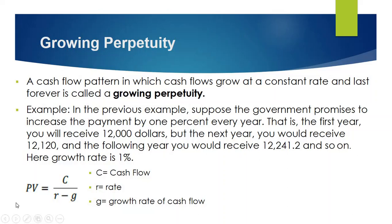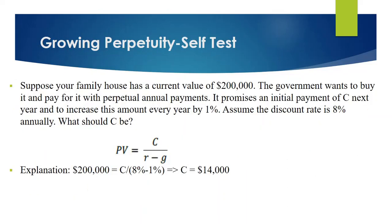The present value of a growing perpetuity is equal to C, which is the cash flow, divided by R minus G. R indicates the discount rate and G is the growth rate of the cash flow. Here, the growth rate of the cash flow is 1%.